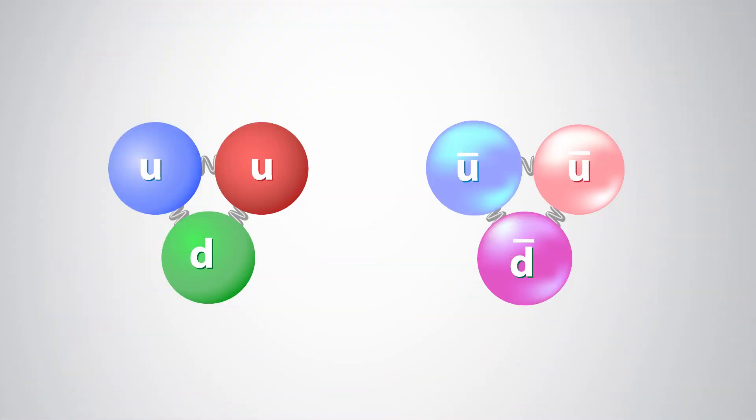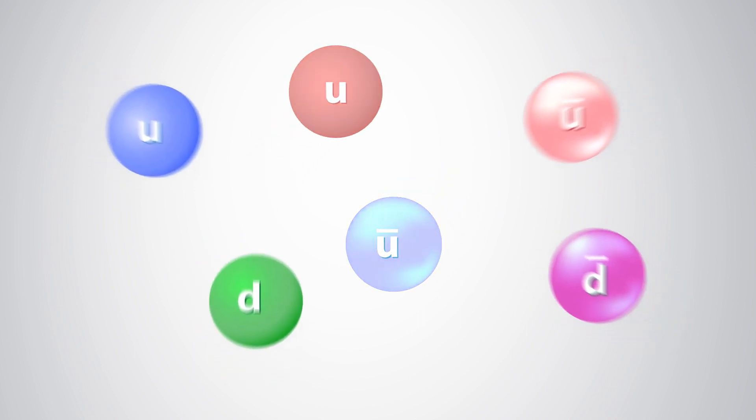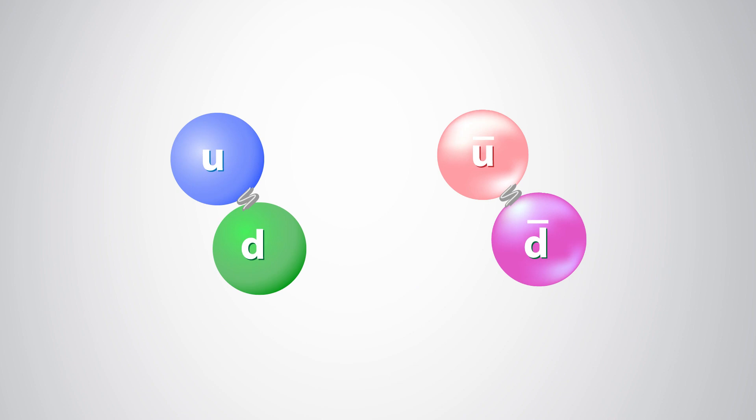The identical quarks, so for the proton, two up quarks, move away, and one of them is attracted by the third quark of the opposite charge. This two-quark formation is called a diquark.